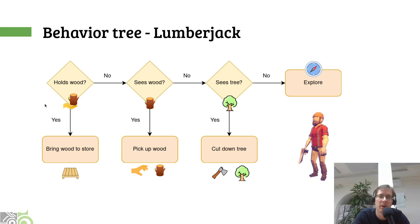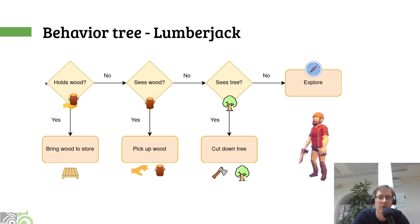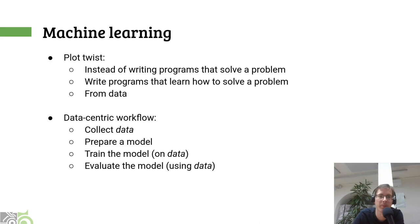So the logic starts and it asks: does the guy hold some wood in his hands right now? He doesn't. Does he see any wood around him? No. Does he see a tree? He doesn't even see a tree. In that case, he should explore, and he will explore until he will actually see a tree. Then he will cut the tree down. In the next cycle, he sees the wood on the ground, so he will pick it up. In the next cycle, he will find out that he actually is holding the wood, so he will bring it to some warehouse. Then this whole thing runs again. Of course, this is a very naive implementation — in practice, behavior trees would be much more complicated to deal with all kinds of situations that can come up in the game world.